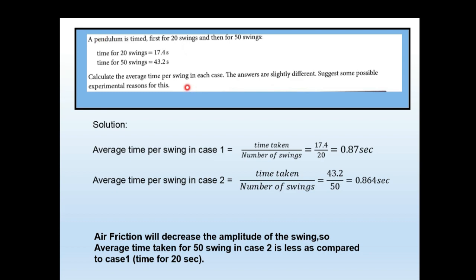A pendulum is timed first for 20 swings and then for 50 swings. Time for 20 swings is 17.4 seconds, so average time per swing in case 1 is 17.4 ÷ 20 = 0.87 seconds. Time for 50 swings is 43.2 seconds, so average time per swing in case 2 is 43.2 ÷ 50 = 0.864 seconds.